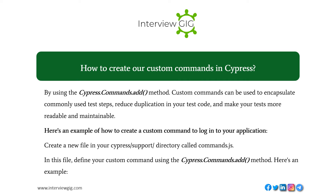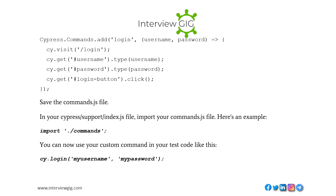How to create custom commands in Cypress? By using the Cypress.Commands.add method. Custom commands can be used to encapsulate commonly used test steps, reduce duplication in your test code, and make your tests more readable and maintainable. Create a new file in your Cypress support directory called commands.js, define your custom command using Cypress.Commands.add, then import your commands.js file in your Cypress support index.js file. You can then use your custom command in your test code.